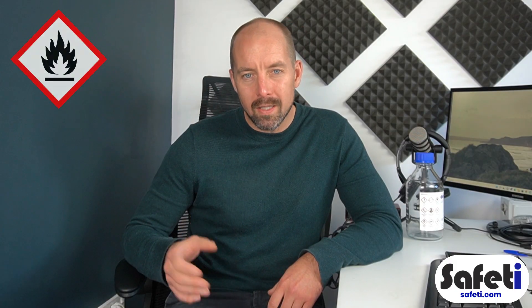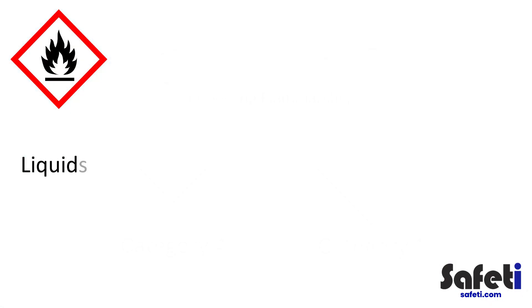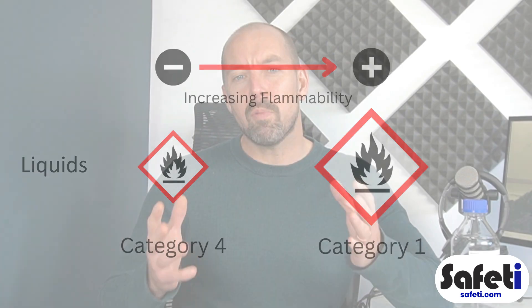For liquids it works along similar lines, however they'll be assigned a number from category one to category four, with category one again being the most flammable material. This type of number and letter categorization is used for the other hazard classes as well, and we'll leave a download link alongside the video so you can dig into the detail of the information for each of those different hazard classes.